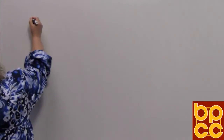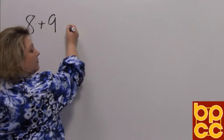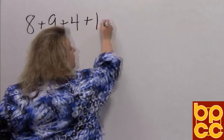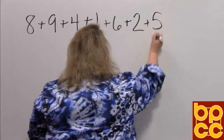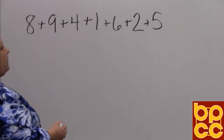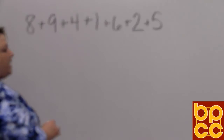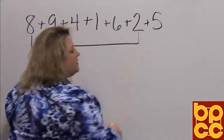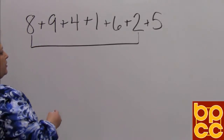When we do this, what you want to do is get together numbers that when you add them they make a group of ten. So our first group of ten could be from the eight and the two, because when you add eight and two together you get ten.